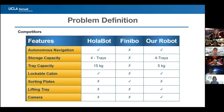We looked into several competitors to compare with our robot: the Holobot and the Finibo. The main distinguishing feature of our robot is that we are able to autonomously collect dishes from the table.